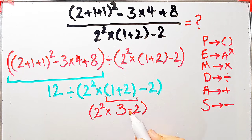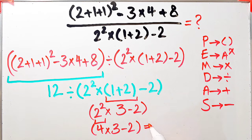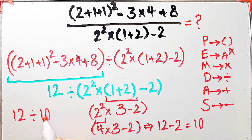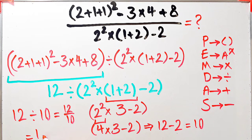We have exponent, multiplication, and subtraction. First simplify the exponent: 2 to the power of 2 equals 4. Now we have 4 times 3 minus 2. Multiplication has higher priority than subtraction, so 4 times 3 equals 12, then 12 minus 2 equals 10. The question is now 12 divided by 10, which equals 1.2. The final answer equals 1.2.